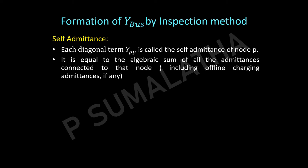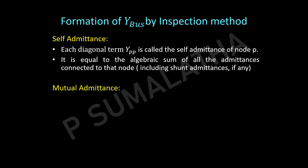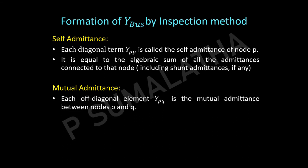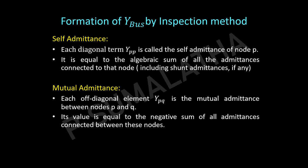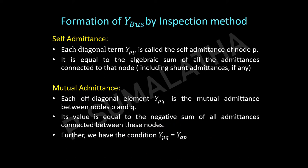Line charging admittances or shunt admittances also need to be considered in the calculations. For the mutual admittance, each off-diagonal element Y_PQ represents the mutual admittance between nodes P and Q. That value equals the negative of the admittances connected between those two nodes. If two transmission lines are connected between two nodes, we add those two admittances with a negative sign. Also, Y_PQ equals Y_QP.